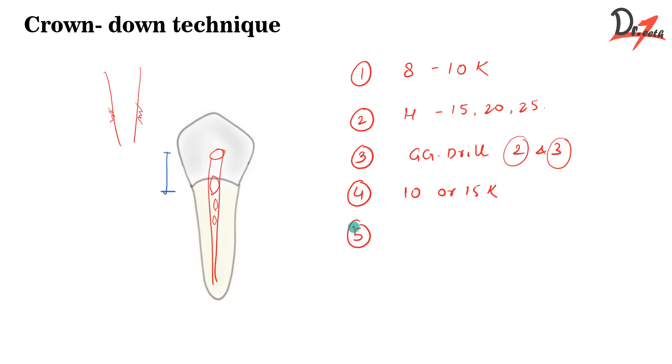Then fifth, we will take a large file and that will be like 60 K file and we will insert it up to the level of binding. So binding means the file cannot go further inside. So we'll take 60 number of file and we will go till the level of binding. Then we will use watch winding motion. And how will you go? Will you just go straight? No, you will use the watch winding motion. You know how wrist watches have that knob-like thing and you just rotate it. So similarly, you will use that watch winding motion to instrument the canal. So after 60 number file, we will progress sequentially to smaller number files. So from 60 we go down to smaller diameter file and ultimately we will reach the working length.